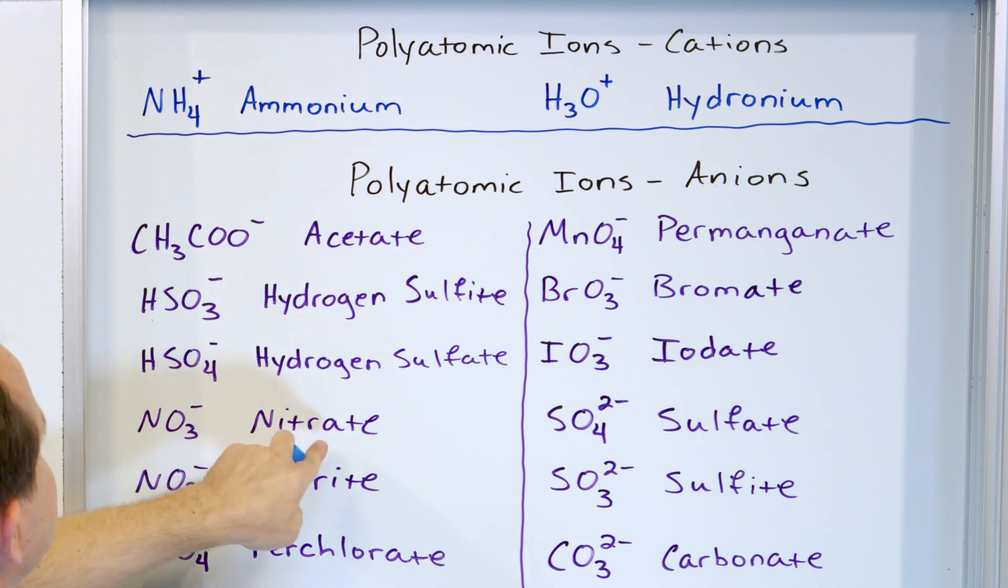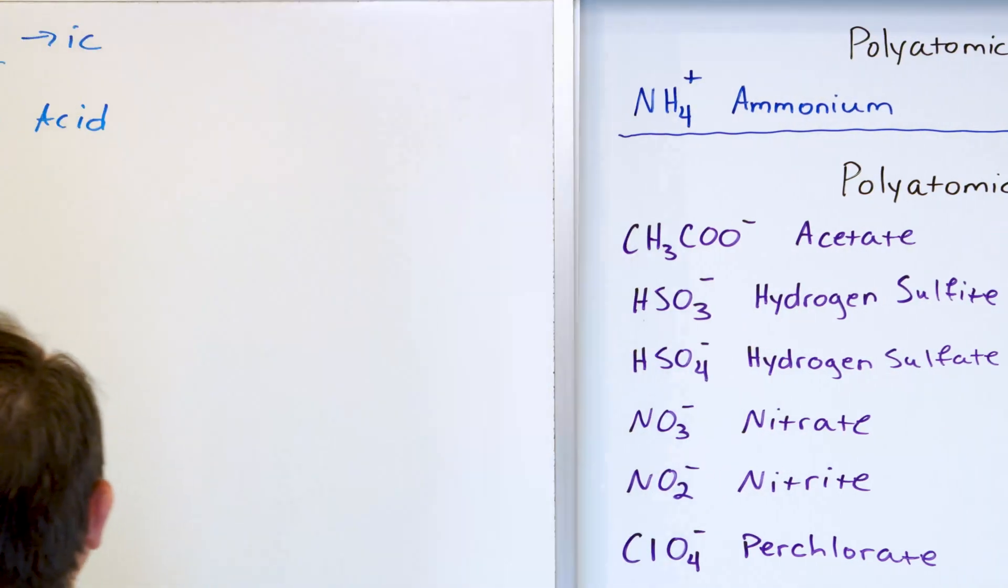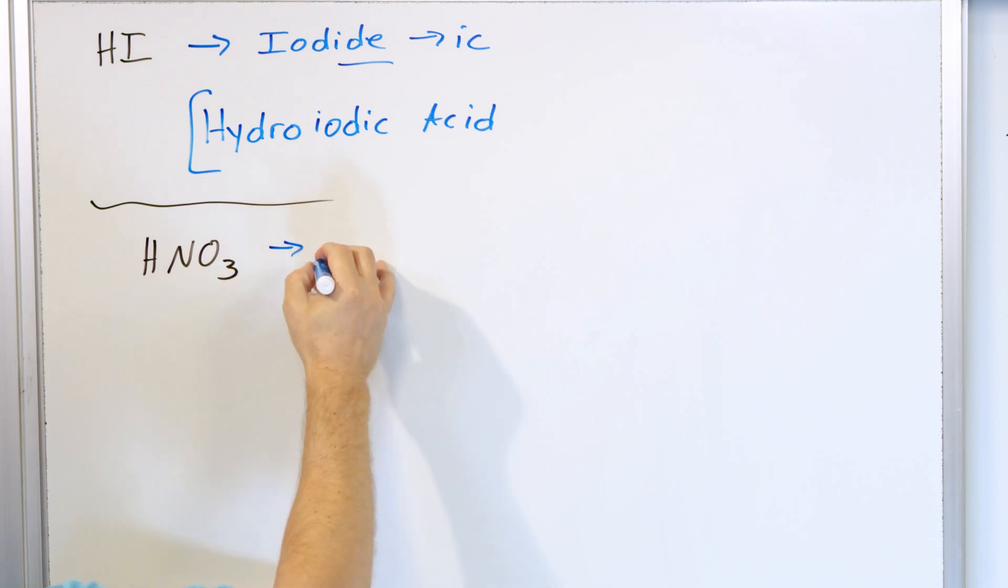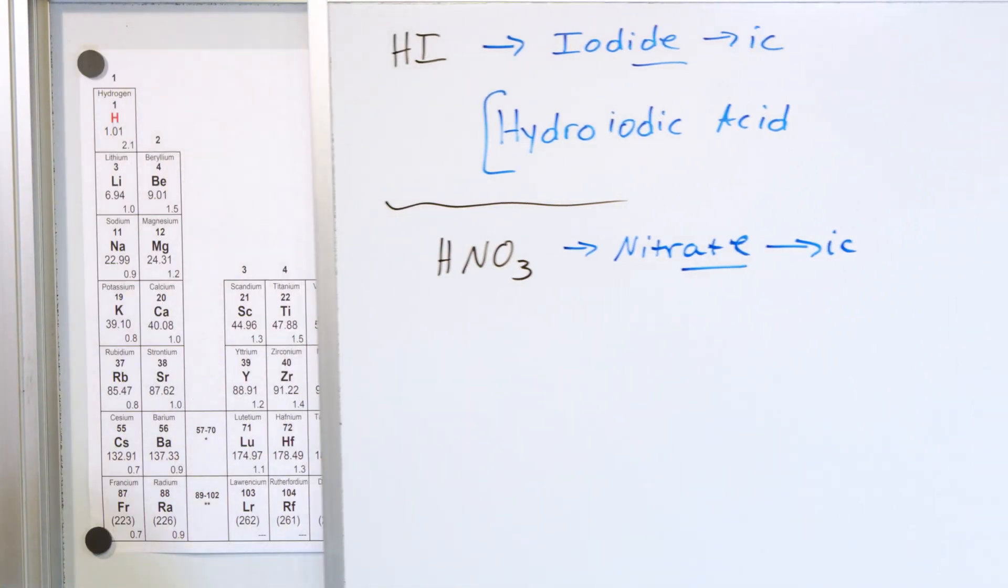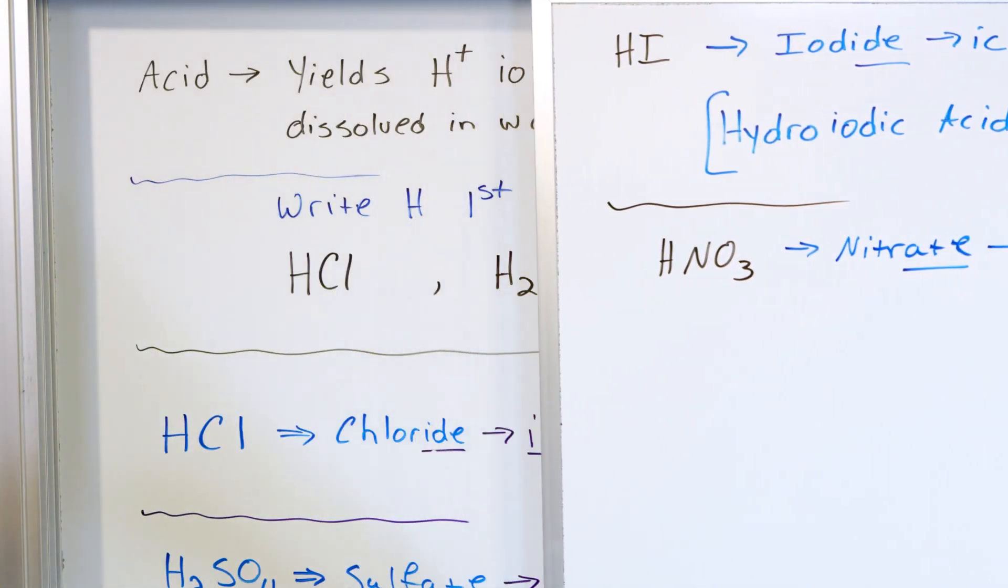So NO3 is the nitrate ion. So we write down nitrate. It gets named based on that nitrate. And if we look back at our rules, the ATE turns into IC. We've looked at it many times. I guess I'll do it for this first one.